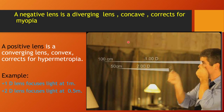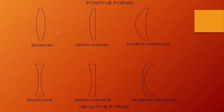A negative diverging concave lens corrects myopia, while a positive converging convex lens corrects hypermetropia. A one-diopter lens focuses light at one meter (100 cm); a two-diopter lens focuses at 50 cm — its power is double. Positive lens forms include bi-convex, plano-convex, and meniscus; similarly, negative forms include bi-concave, plano-concave, and negative meniscus.